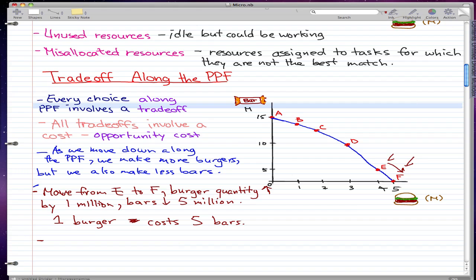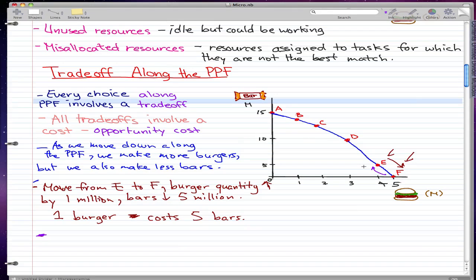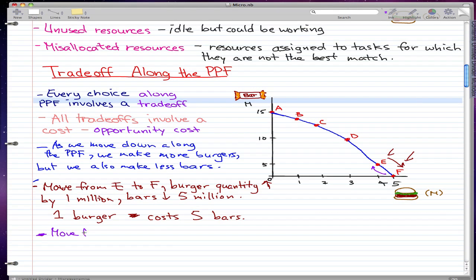Now let's go the other way. Let's move from F to E. So when this happens, our burger quantity will decrease by 1 million, and our bars increased by 5 million, so it went from 0 to 5 million.